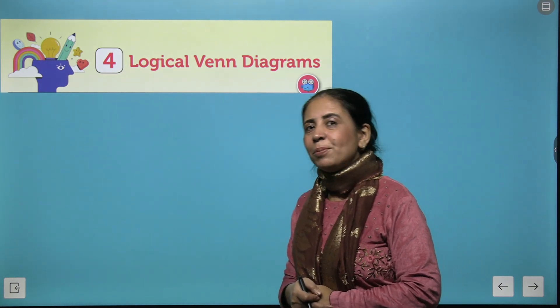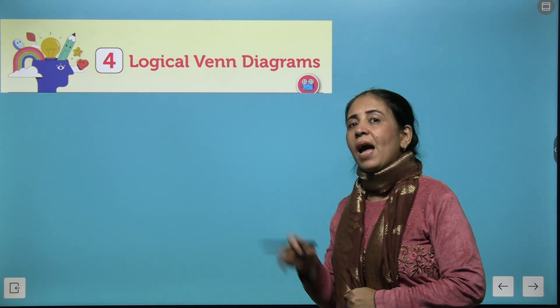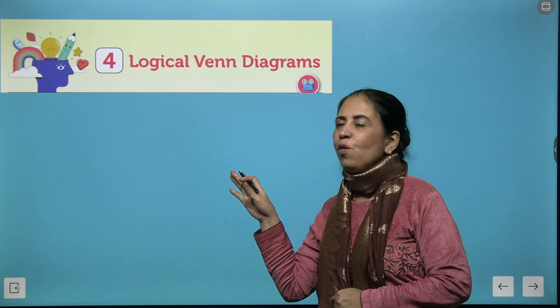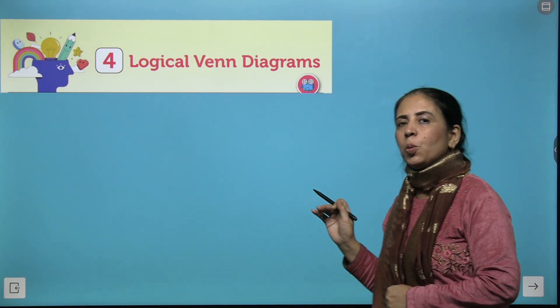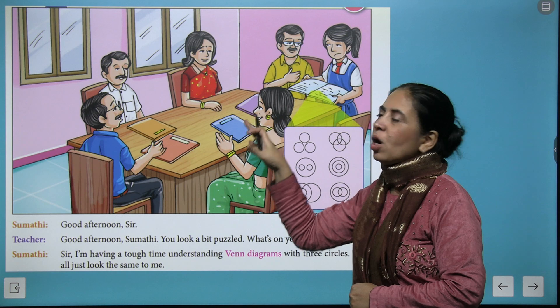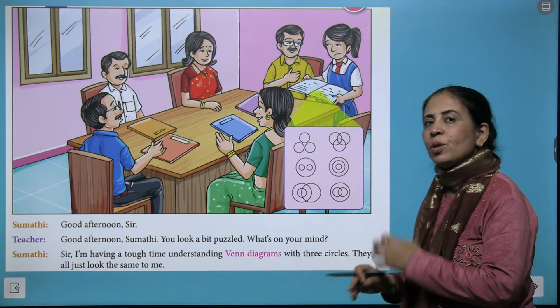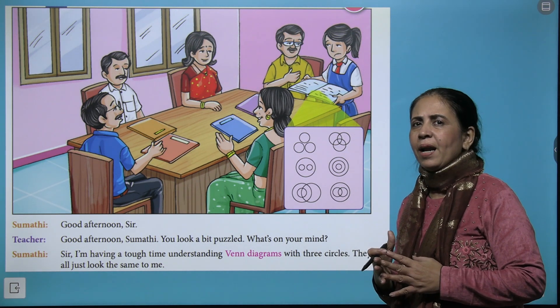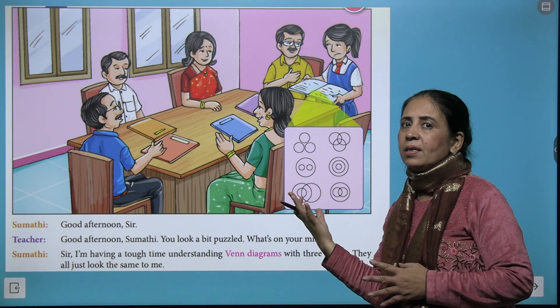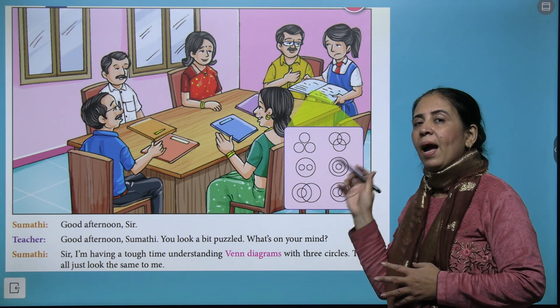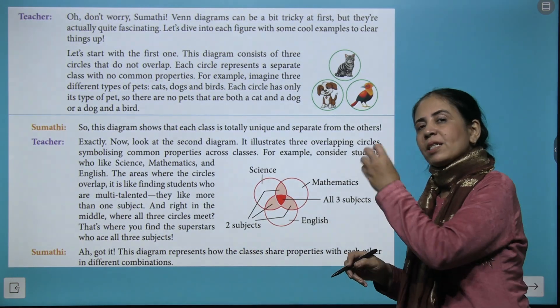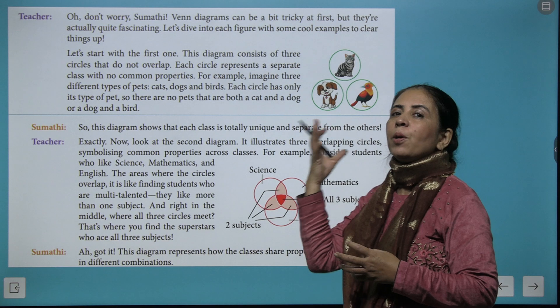Hello genius minds, welcome to Grade 7 Reasoning Book. I have brought Chapter Number 4 for you - Logical Venn Diagram. When you talk about Venn diagrams, here we have Sumati who is really puzzled how to solve Venn diagrams and she is asking her teacher to help.